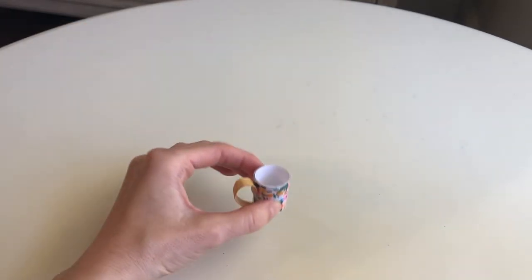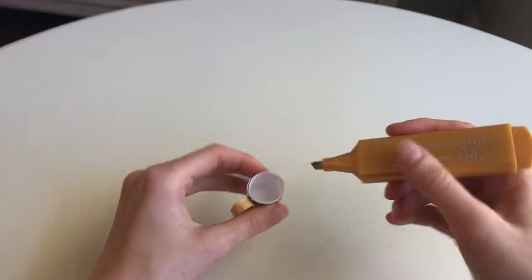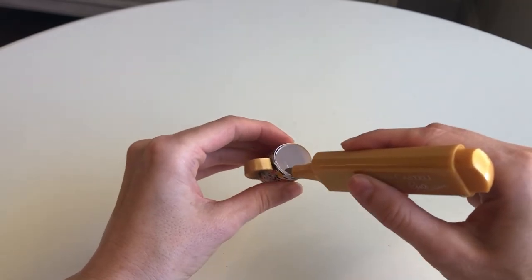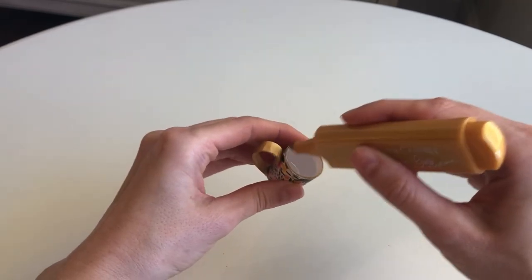For a finished look you can grab your gold marker and lightly trace the top of the mug. That way it has a gold edge around the top that matches the handle.